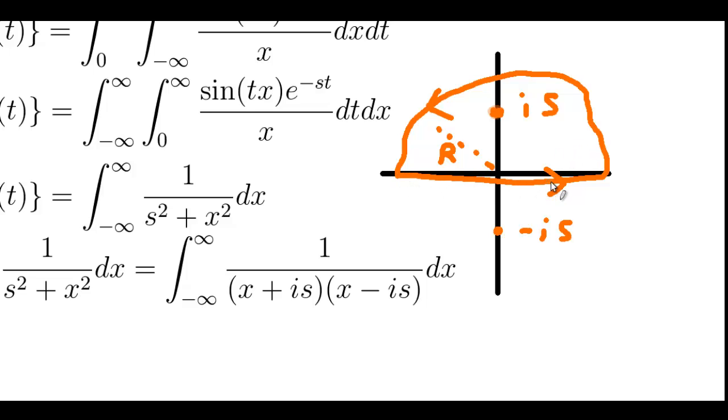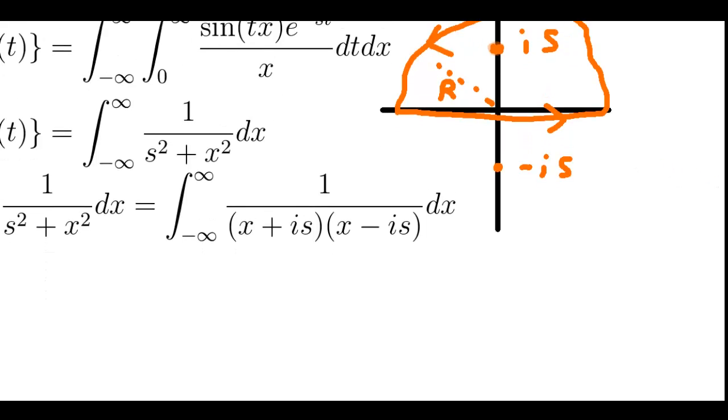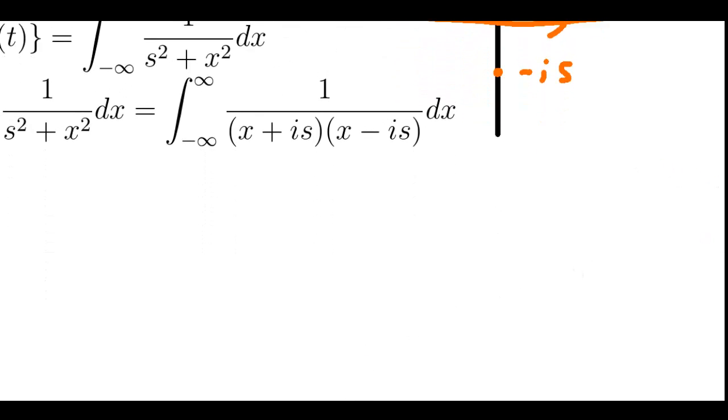We're only left with this integral over the real line. So that means we can apply Cauchy's integral formula to this. And just do 2 pi i times the residue, the pole is. Which we will now do.